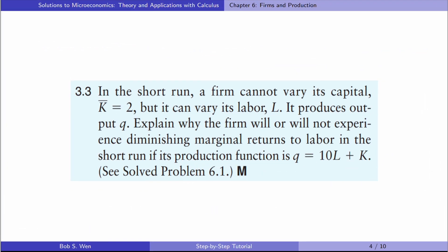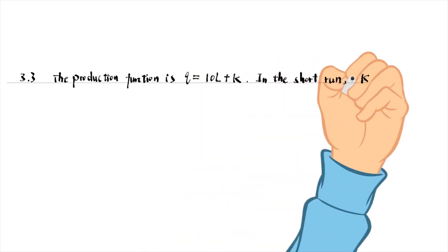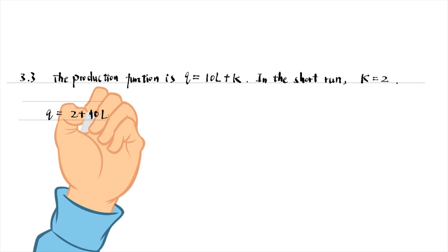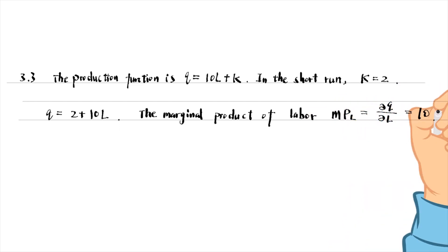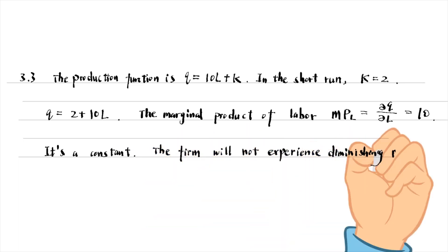Let's find answers to exercise 3.3. In the short run, a firm cannot vary its capital K equals 2, but it can vary its labor L. It produces output Q. The production function is Q equals 10 times labor plus capital. In the short run, capital is fixed at 2, so the short run production function is Q equals 2 plus 10 times L. The marginal product of labor equals the partial derivative of Q with respect to L, which equals 10 — a constant. It is not a function of labor, so the firm will not experience diminishing returns to labor.